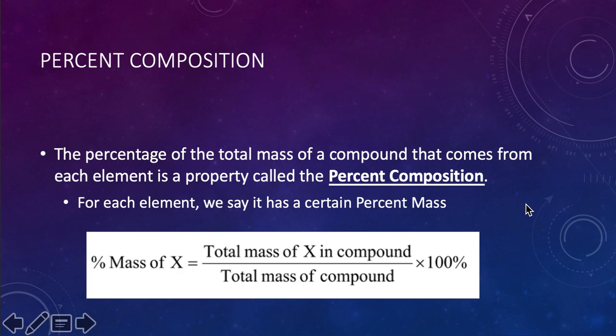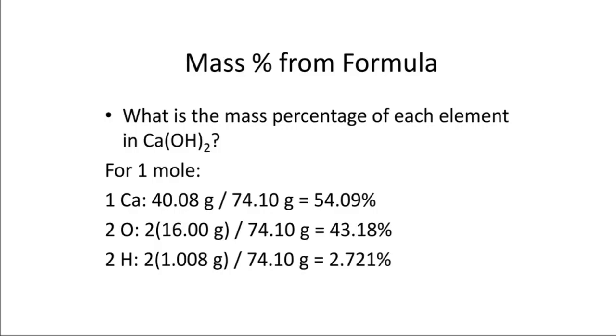Let me show you how this works, and then you're going to do some practice with this, with the second worksheet. Here it is. You've got mass percent from formula. So you're going to figure out the mass percentages of calcium, oxygen, and hydrogen in the compound calcium hydroxide. You can see that I give you the formula there for calcium hydroxide.